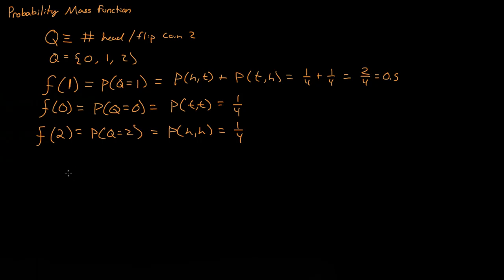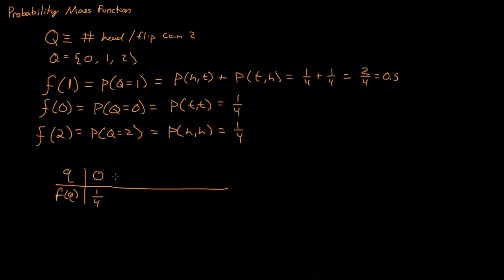So now let's make a little table with columns f(q) and q. If q is zero, the probability of getting zero heads is one-fourth, so the probability mass function equals one-fourth. If q is one, the probability of getting one head when flipping a coin twice is two-fourths, or 0.5. And finally, if q is two — getting heads two times — the probability mass function is one-fourth.